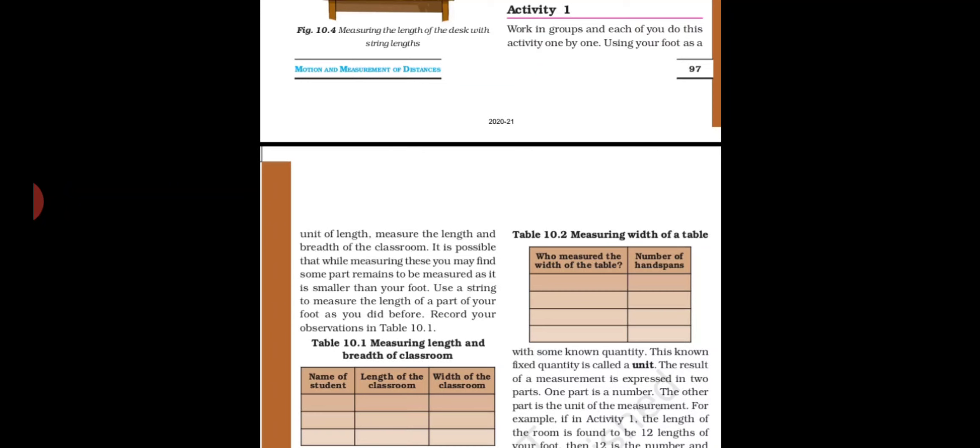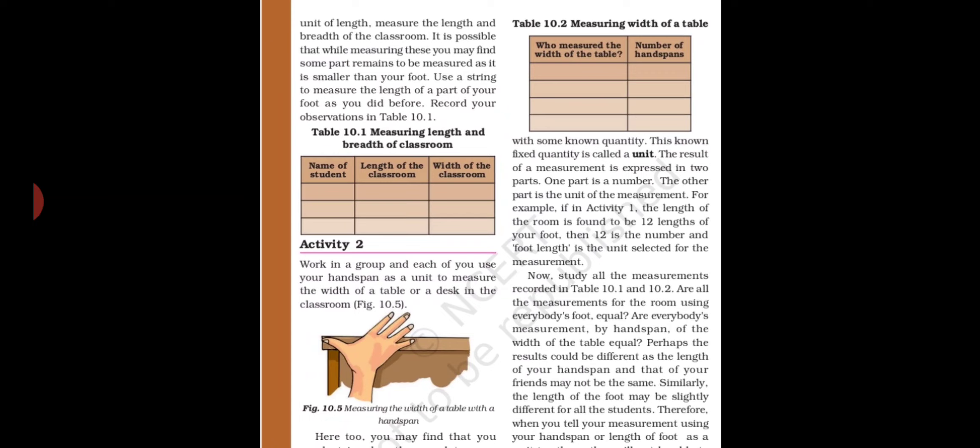Activity 2: work in a group and each of you use your hand span as a unit to measure the width of a desk in the classroom. You take your hand — from the top of your thumb to the top of your last finger — and measure across the desk repeatedly.